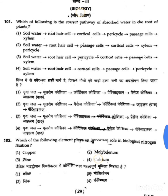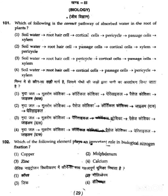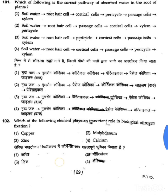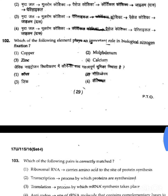The pathway goes through cortical cells, then passage cells, which is only the fourth option. After the passage cell comes pericycle, and then xylem. So this matches option 4. The correct answer of question 101 is option 4.